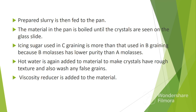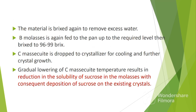Hot water is again added to the material to make crystals have rough texture and also wash any false grains. Remember, crystals with rough texture absorb sucrose faster than those which are smooth. After washing, viscosity reducer is added to the material. The function of viscosity reducer is to reduce the viscosity of materials in the pan for efficient boiling and circulation. The material is brixed again to remove excess water. Feeding of B molasses is continued up to the required level. Then the material in the pan is brixed to around 96–99 degrees brix.